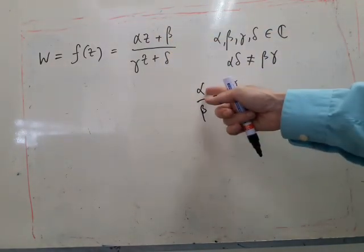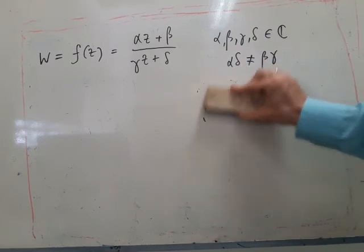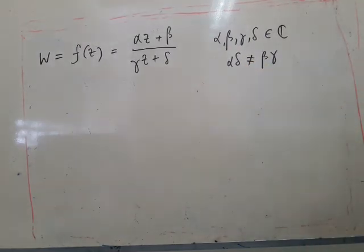Multiplying through this, this is equivalent to this. So we're not allowed this. Otherwise, we're free to choose alpha, beta, gamma, delta.